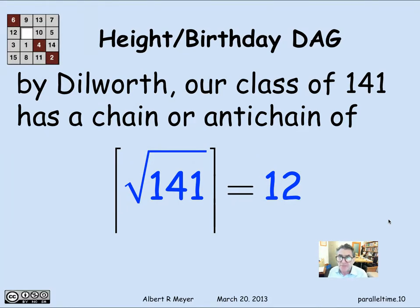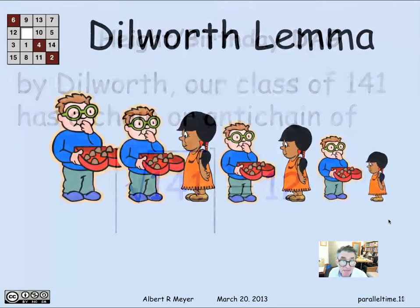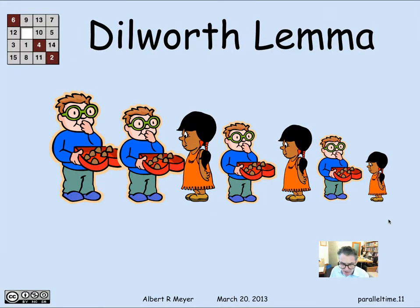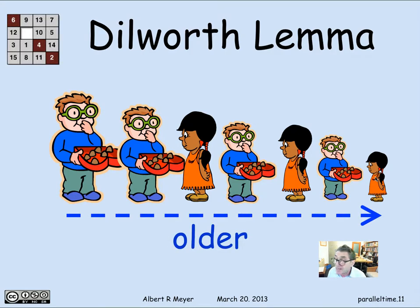According to Dilworth's lemma, in a class of 141 students, we're going to have a chain or an anti-chain in this product DAG of size at least the square root of 141 rounded up, which is 12. What does it mean for a group of students to be an anti-chain in this height-age graph? If we line students up in order of height — tallest on the left, shortest on the right — an anti-chain means they must be getting older as they get shorter. If any student to the right was both shorter and younger than one to the left, they'd be comparable and it wouldn't be an anti-chain.